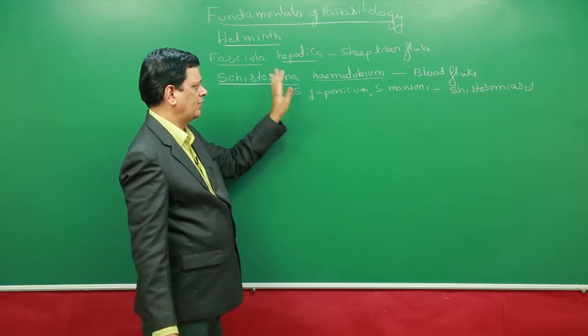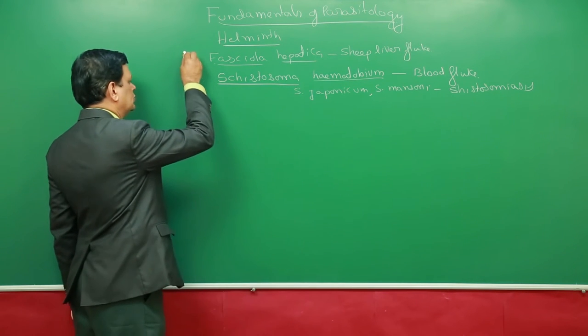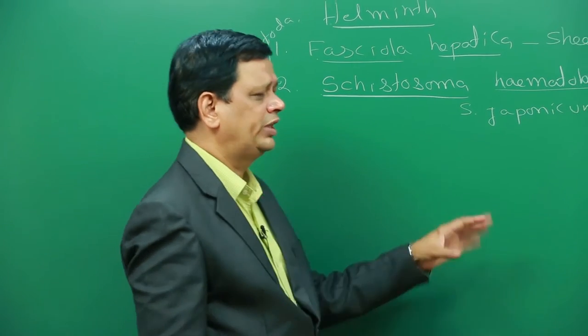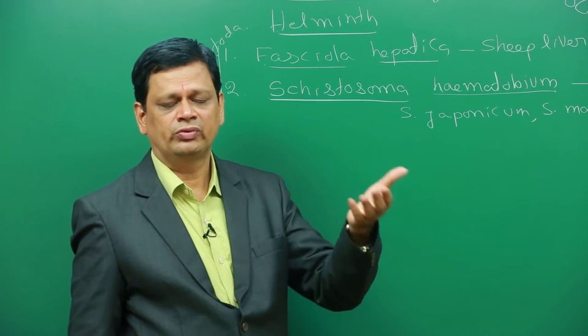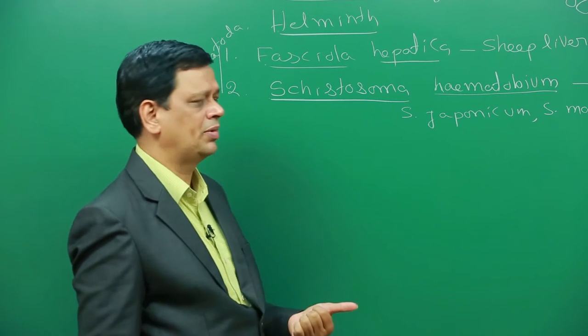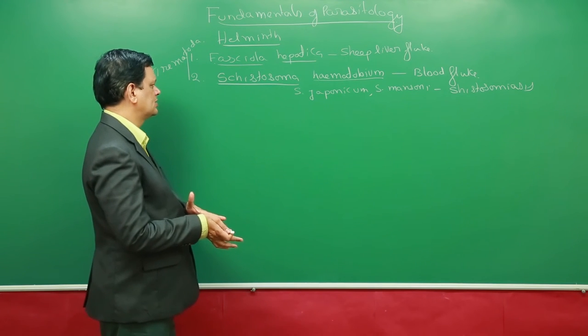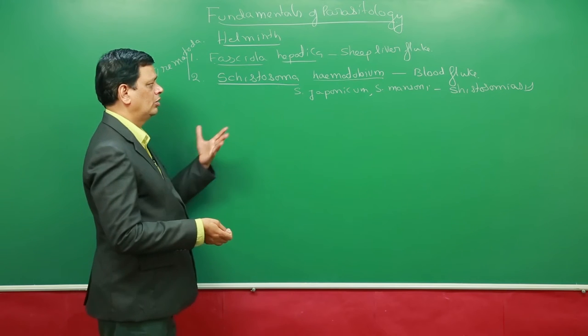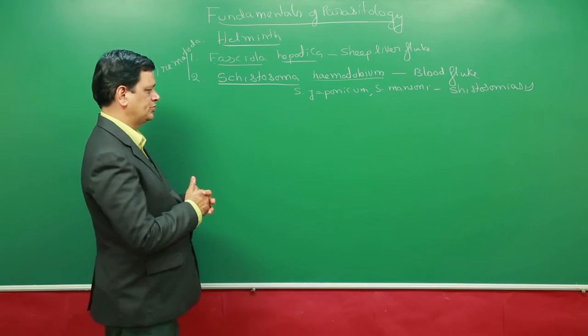So it is affecting human beings. Earlier case this is not affecting human beings. But these two belong to a class called Trematoda. In both cases, secondary host means another host where young ones develop is snail. Snail is a mollusca member. But this is one rare condition in Schistosoma is unisexual. Normally, flatworms are bisexual means hermaphrodites. A rare exception here.